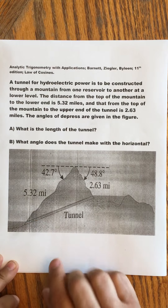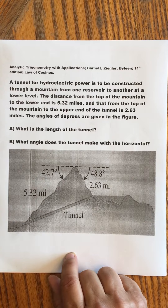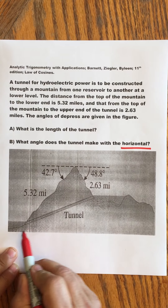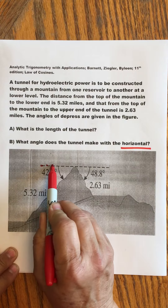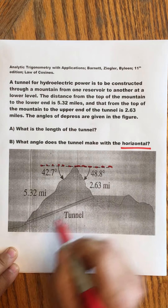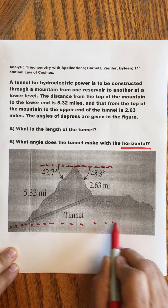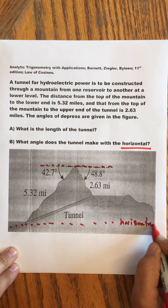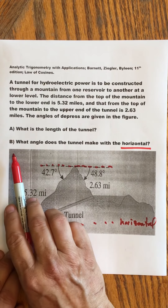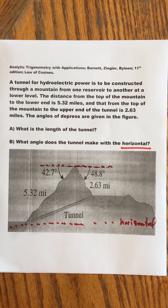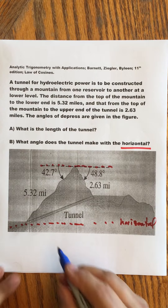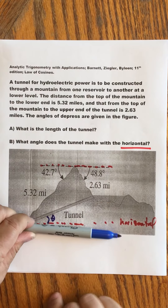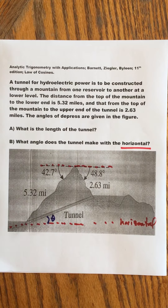They ask two things: what is the length of this tunnel, and what angle does the tunnel make with the horizontal? It's incredibly important to note there's a horizontal here and a horizontal here. So in part B, what they're asking for is this angle right here — we'll call it theta.